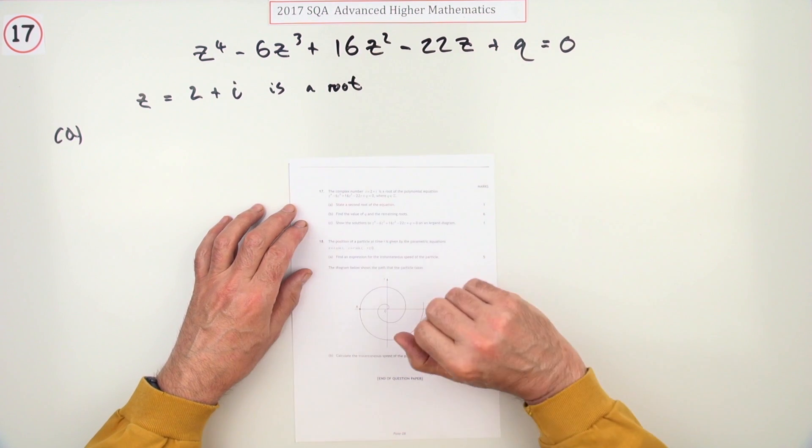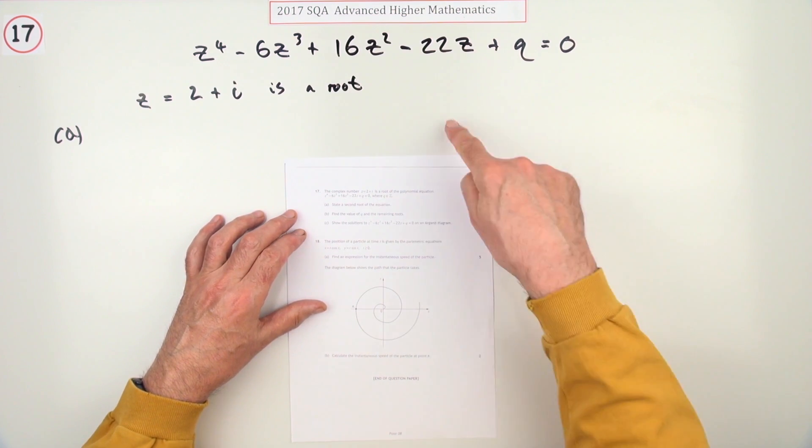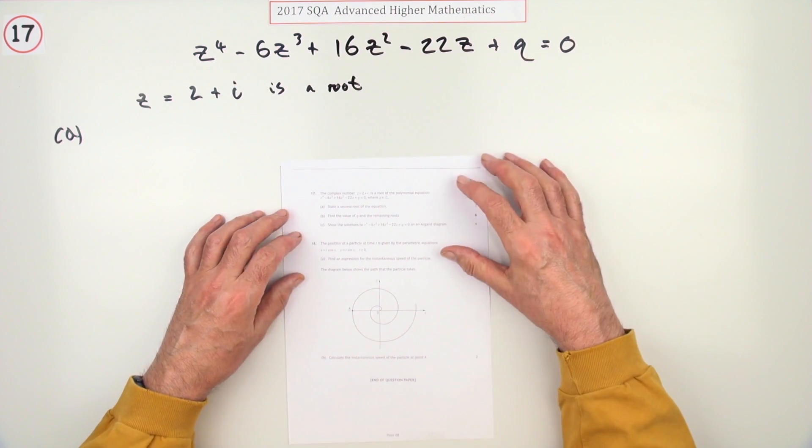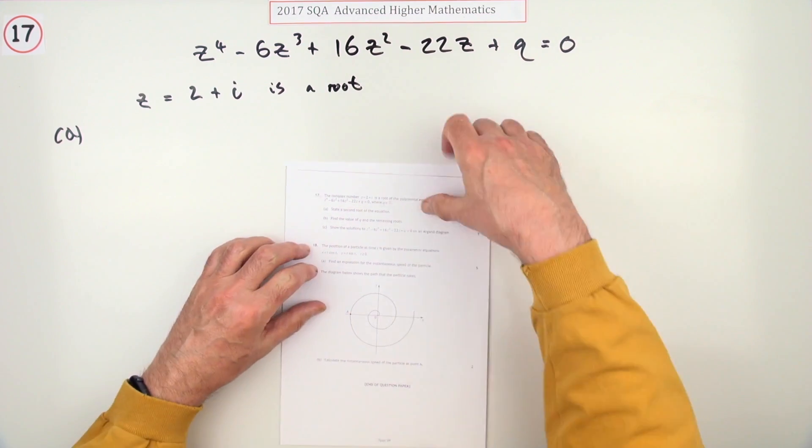Number 17 from the 2017 Advanced Higher. The complex number question, eight marks, but it's just the roots of a polynomial—the friendly face of complex numbers rather than some of the other things they can ask you to do.